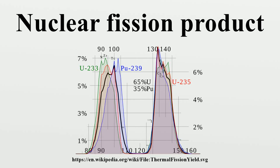Nuclear fission products are the atomic fragments left after a large atomic nucleus undergoes nuclear fission. Typically, a large nucleus like that of uranium fissions by splitting into two smaller nuclei, along with a few neutrons, the release of heat energy, and gamma rays.